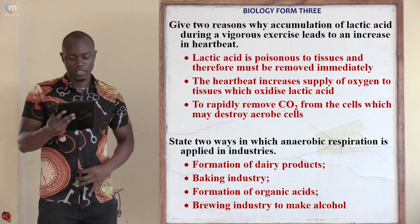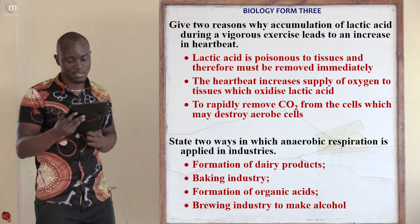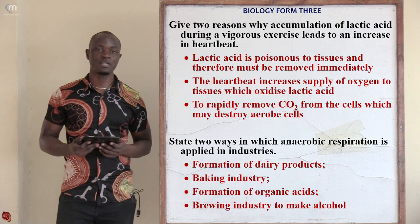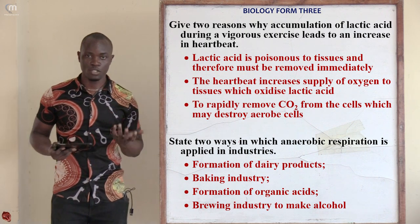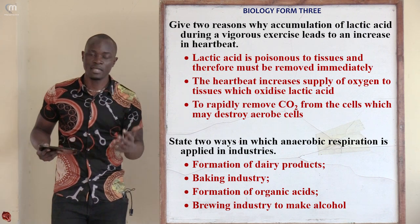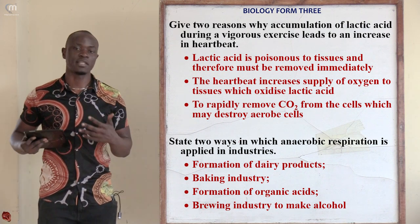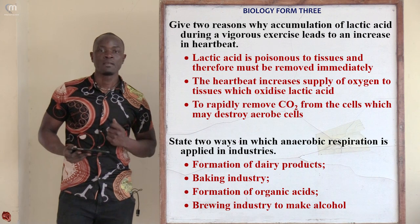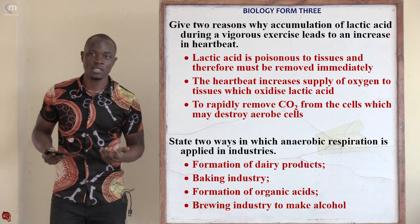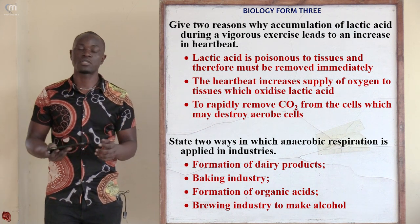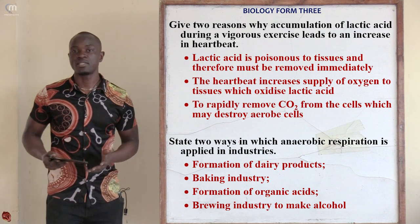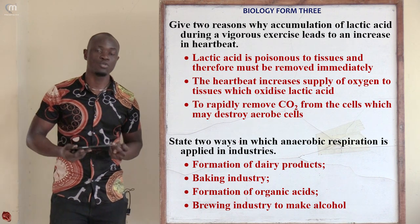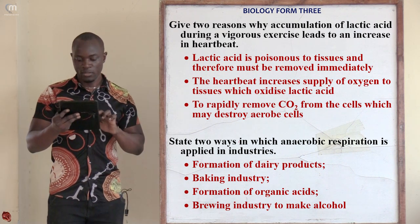Question twenty-two: give two reasons why accumulation of lactic acid during vigorous exercise leads to an increase in heartbeat. First, lactic acid is poisonous in tissue, so the heartbeat increases to accelerate removal of lactic acid from muscles and tissues to prevent poisoning and damage. Second, the heartbeat increases to supply oxygen to tissues so that lactic acid can be oxidized into energy. Third, it also facilitates faster removal of carbon dioxide from cells and tissues by the blood.